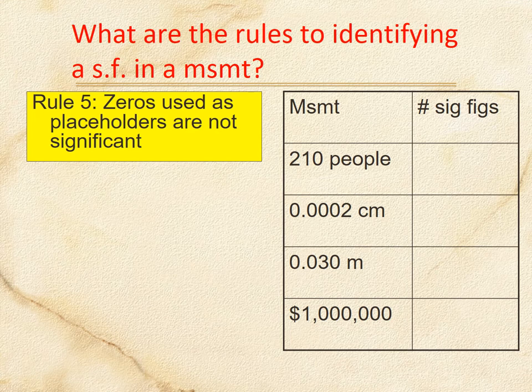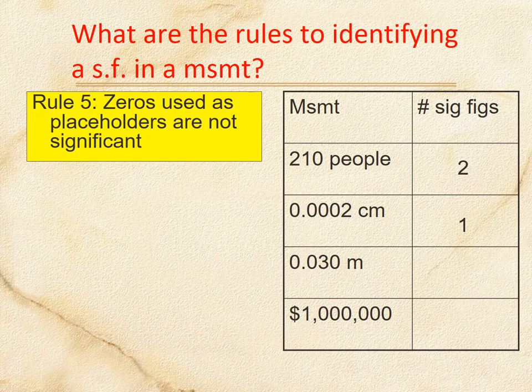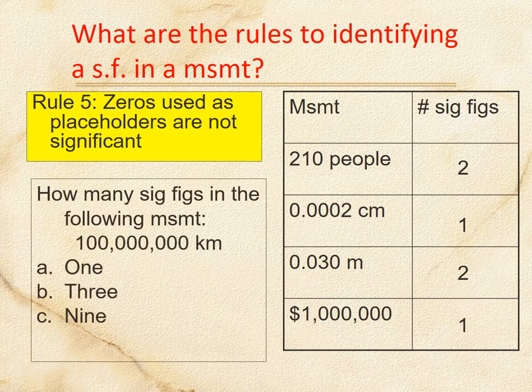Zeros used as placeholders are not significant. So 2,100 without a decimal is only two sig figs, and 0.0002 is only one sig fig. Tricky one: 0.030 — the first real number is 3, and there's a zero after it, so it's two sig figs. One million dollars is only one sig fig. For 100 million kilometers, there's no decimal, so if you said a — one sig fig — you are correct.